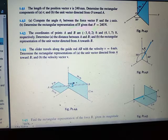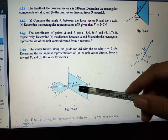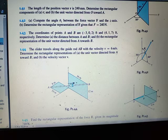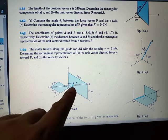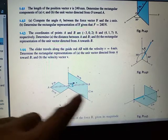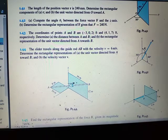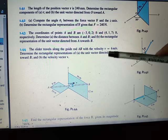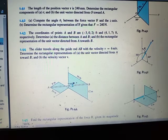As you can see, we have a slider. It slides, nagsaslide siya from point A to point B. It slides upward at a certain velocity. And we are asked what is the unit vector directed from A toward B. So without further ado, punta na tayo dun sa ating solution.